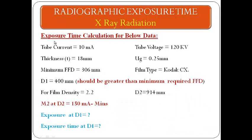So we have to calculate the expiry time for this data. The tube current = 10 mA, tube voltage = 120 kV, thickness = 18 mm, and UG = 0.25 mm as selected.